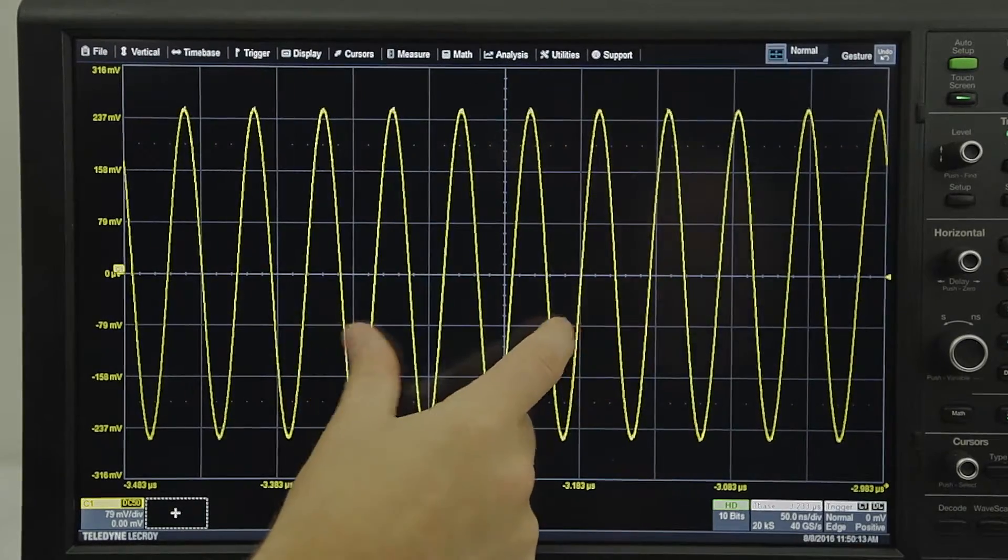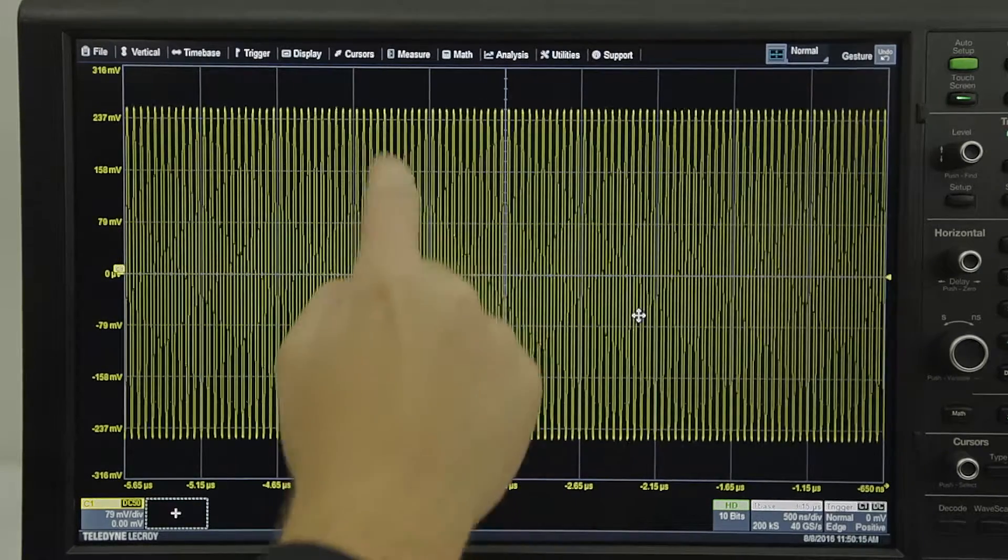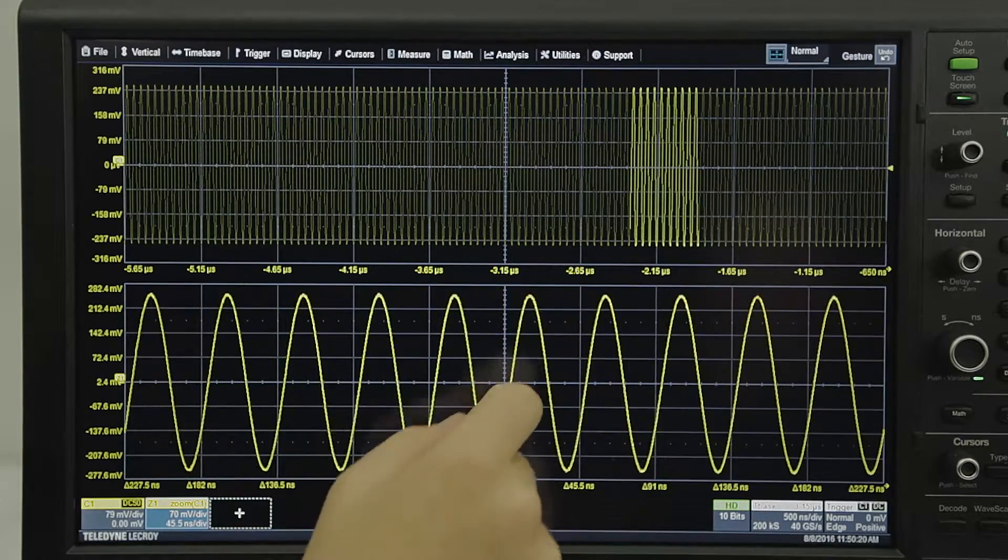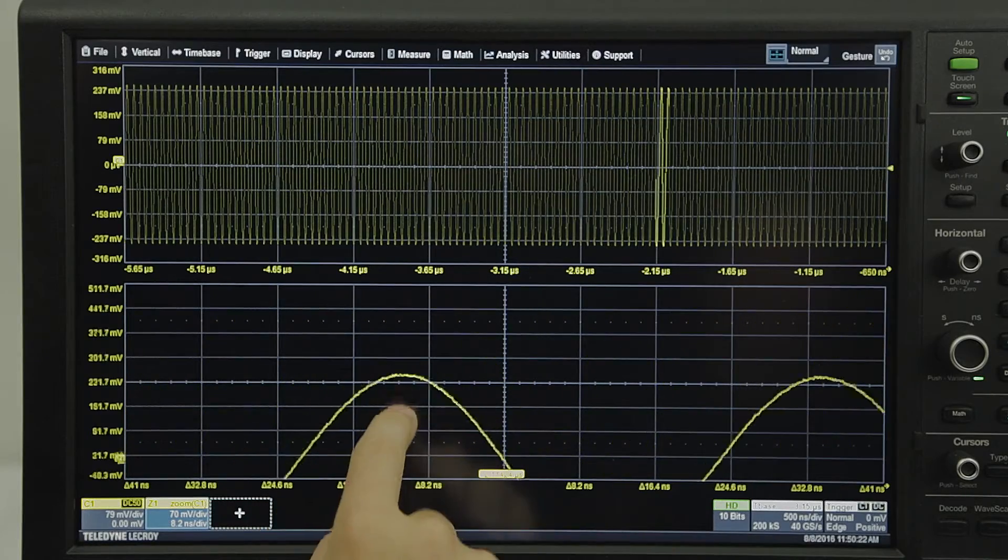The HDO9000 provides a superior user experience featuring a large, bright, 15.4-inch capacitive touchscreen and a 256-gigabyte SSD.